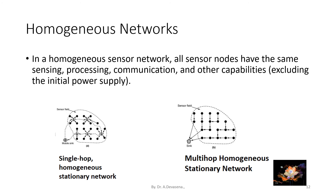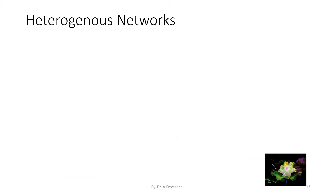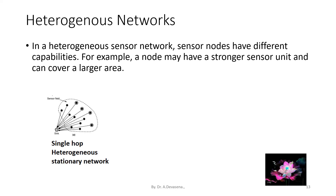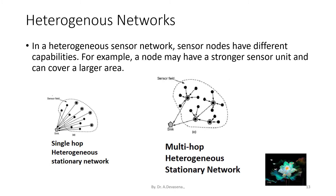Heterogeneous networks: in a heterogeneous sensor network, sensor nodes have different capabilities. For example, a node may have a stronger sensor unit and can cover a larger area. Here is a representation of a single-hop heterogeneous stationary network and another representation of a multi-hop heterogeneous stationary network.